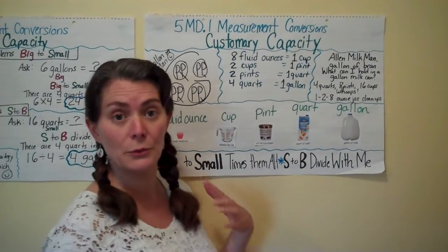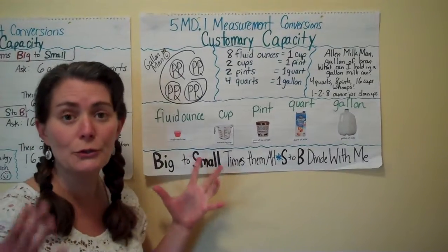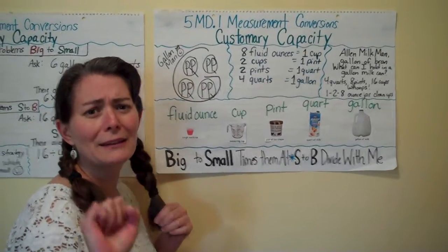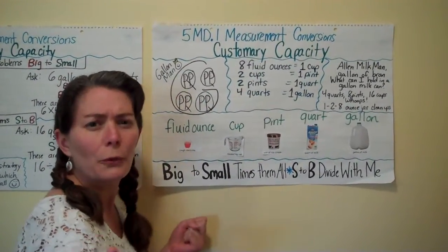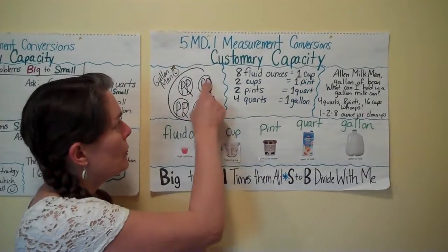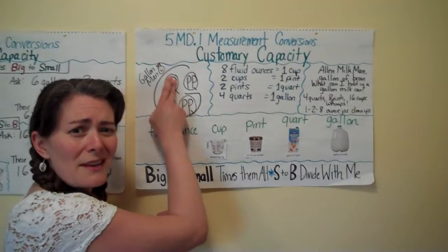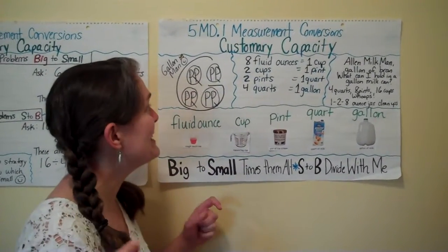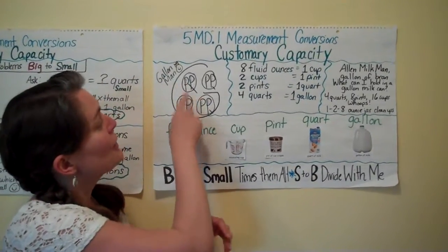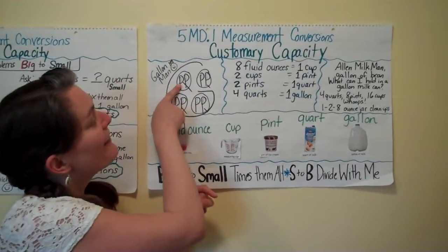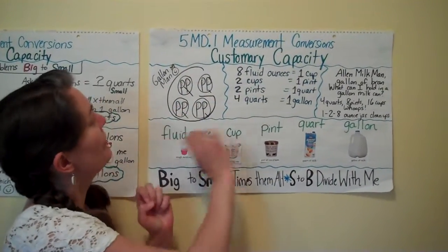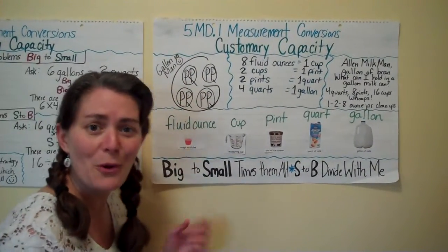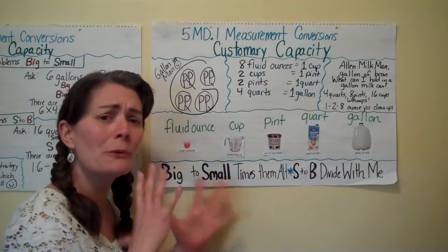Another thing you can use to know which unit is large and which is small is the Gallon Man drawing helper. I put a little video post in there showing what that looks like with the Land of Gallen story — you've probably heard this from 4th grade. In the Land of Gallen there were 4 queens, each queen had a prince and a princess, each prince and princess had 2 cats, and each cat had 8 kittens. So there are 8 fluid ounces in a cup, 2 cups in a pint, 2 pints in a quart, and 4 quarts in a gallon — going from large to small.